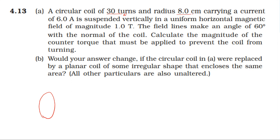Given: radius 8 centimeters, current 6 ampere, magnetic field one tesla. The angle between the magnetic field and the normal to the coil is theta equals 60 degrees. We need to calculate the magnitude of the counter-torque that must be applied to prevent the coil from turning.